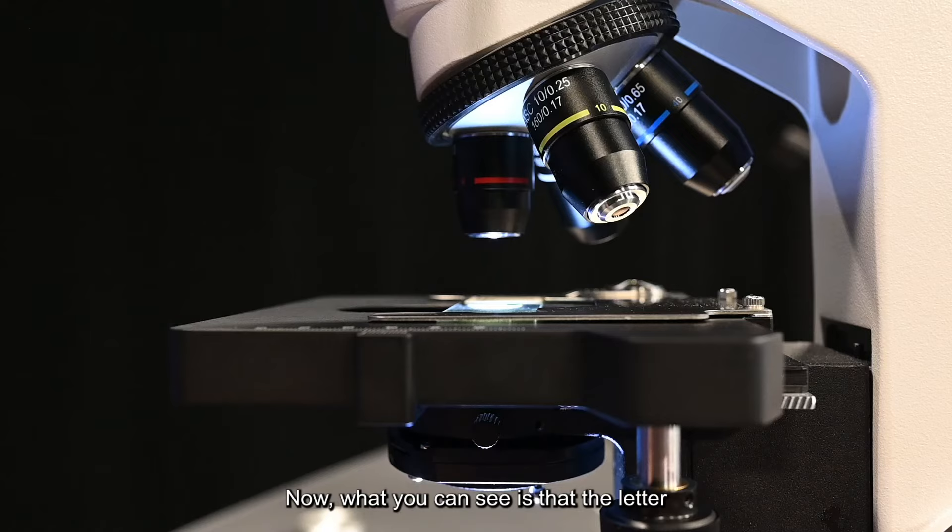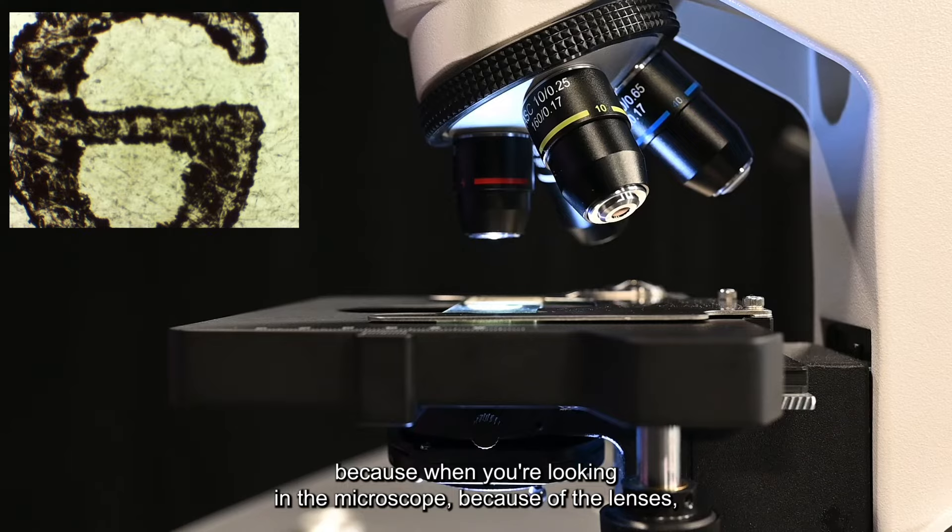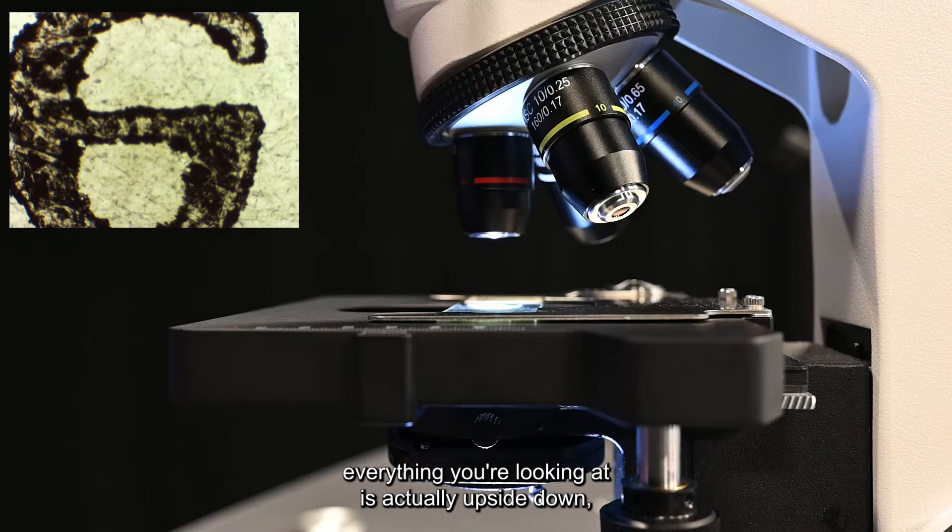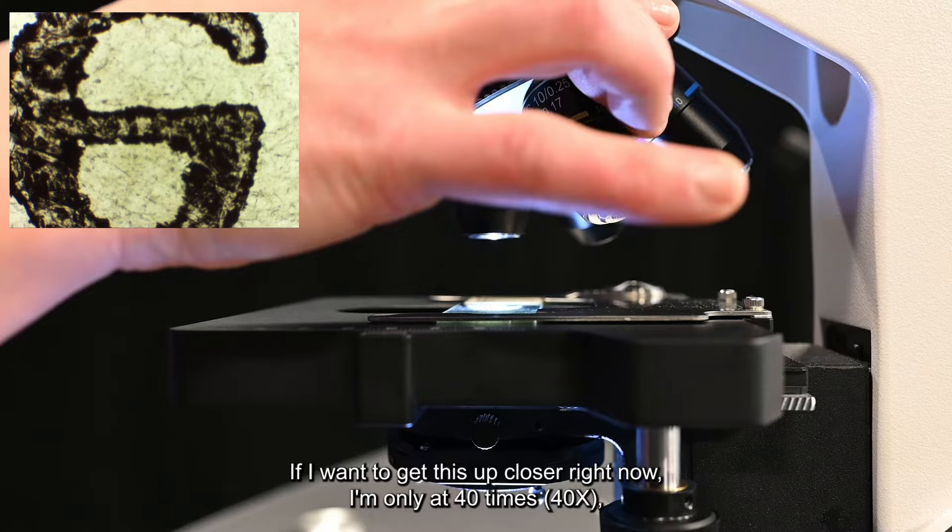Now what you can see is that the letter E looks flipped. It looks flipped because when you're looking in the microscope, because of the lenses, everything you're looking at is actually upside down, which is good to know when you're actually looking through slides to try to find different things when it comes to location and where you need to be going.